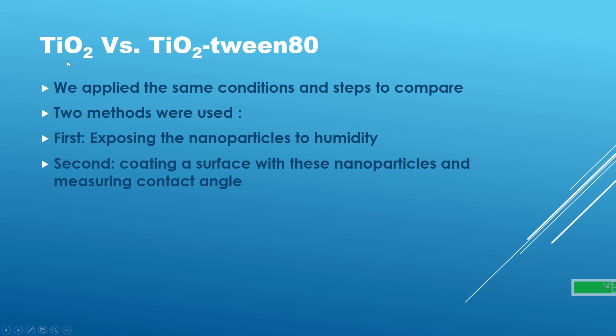Now I'm going to compare TiO₂ and TiO₂/Tween 80. We applied the same conditions — aging time, temperature of calcination, and the same synthesis steps — to compare these nanoparticles. Two methods were used: first, exposing the nanoparticles to humidity; and second, coating two similar surfaces with these nanoparticles and measuring the contact angle.